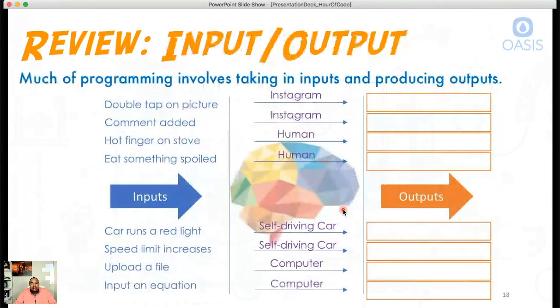In our second session, we talked about how a lot of programming is really about taking in inputs, doing some processing or thinking around those inputs, and then creating an output. This is really what most programming involves. These are the things that do the processing - it could be a computer, it could be a car, humans process things as well, an app does some processing.